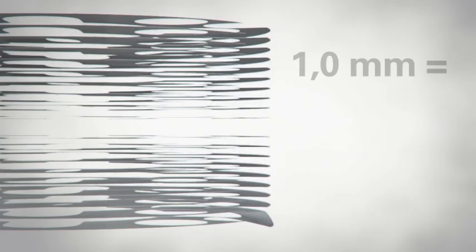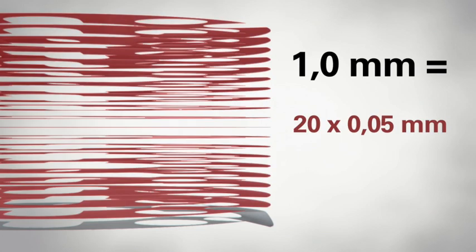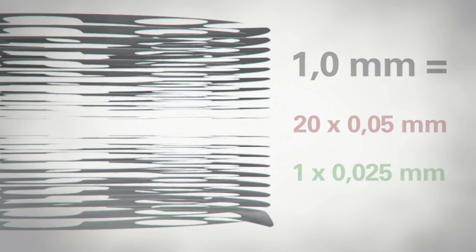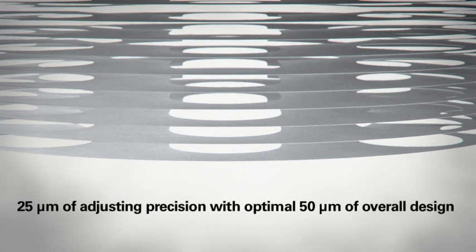This thickness of one millimeter is composed of 20 by 50 micron foils plus a 25 micron high-precision foil. Laminum HP1 means 25 microns of adjusting precision with optimal 50 microns of overall design.